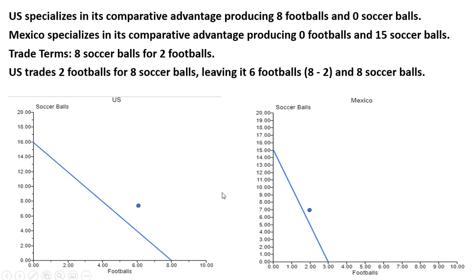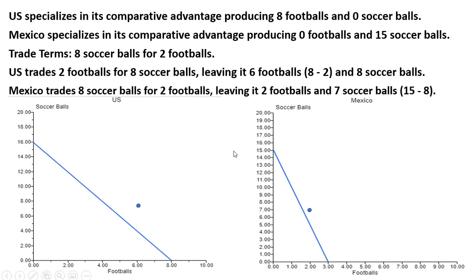Now for Mexico: Mexico trades 8 soccer balls away in return for 2 footballs. It was specializing and producing 15 soccer balls, trades 8 of them away, leaving it with 7. So Mexico will have 2 footballs and 7 soccer balls when all is said and done — the 7 coming from 15 minus 8. And like the US, Mexico is able to consume outside its PPF.